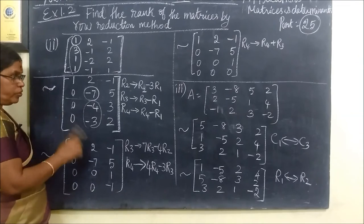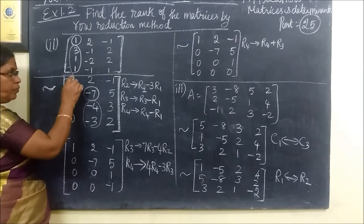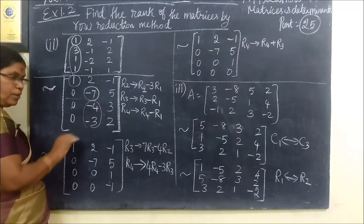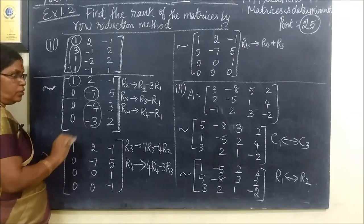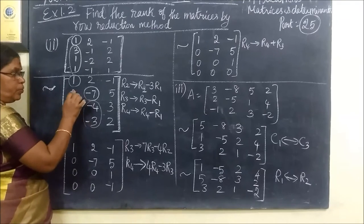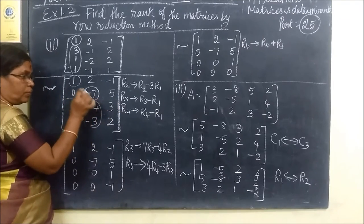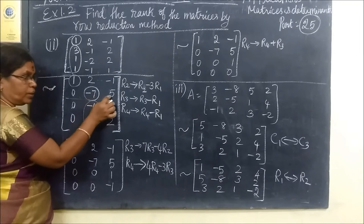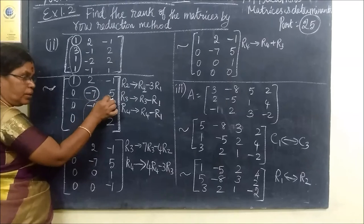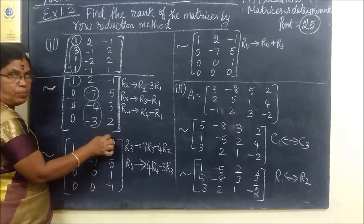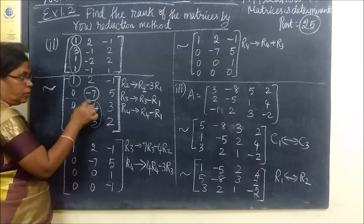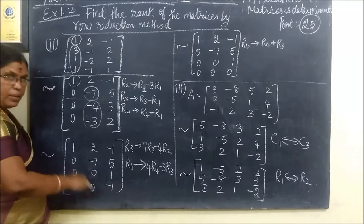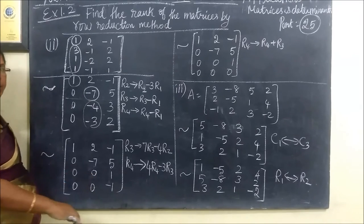Step 1 and Step 2. Step 1 is the 1st non-zero element. Step 2 is the 1st non-zero element. Here we have 0, and this is also 0.